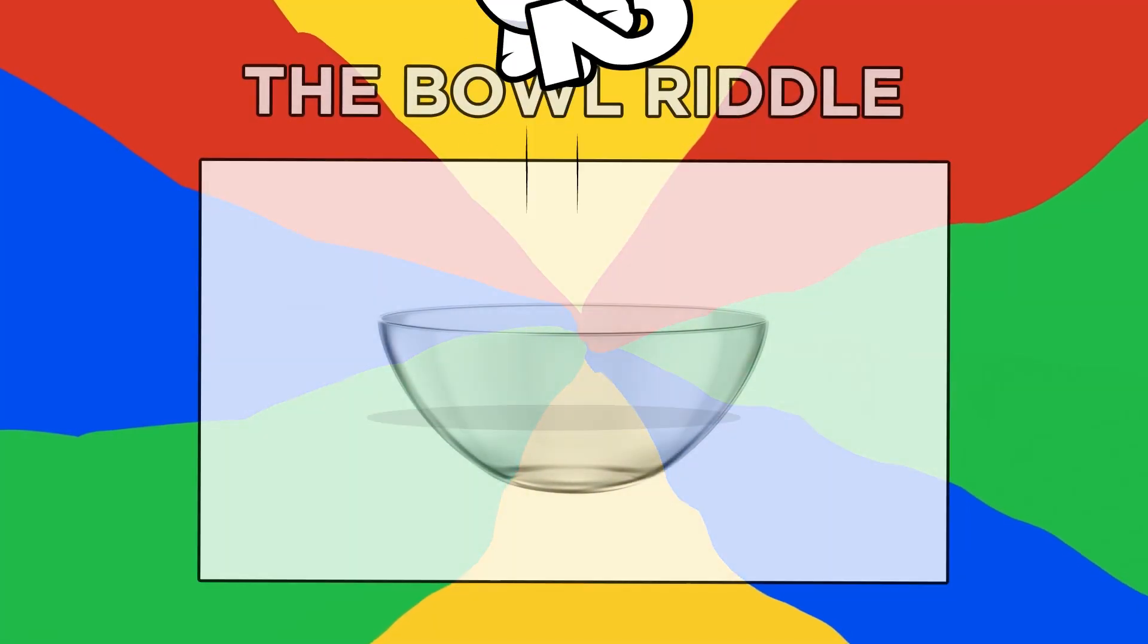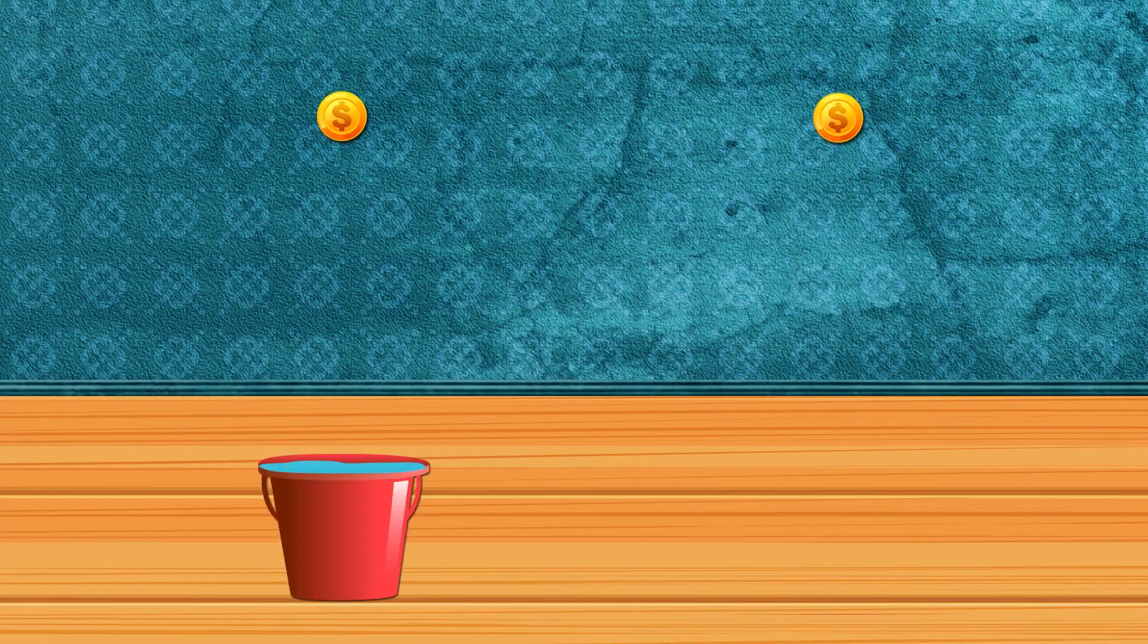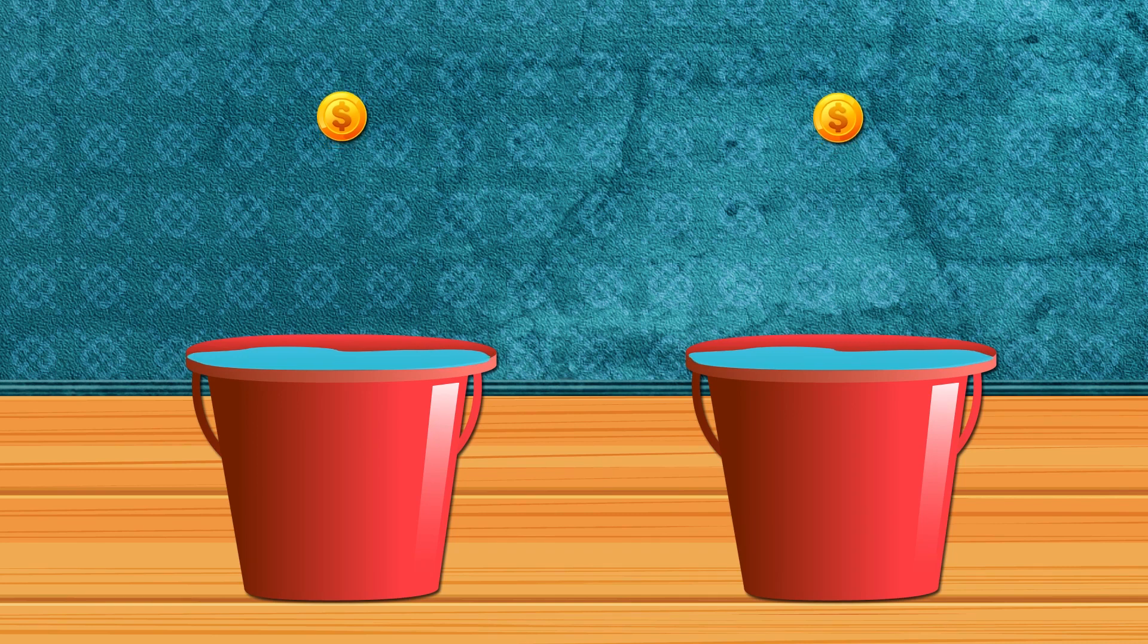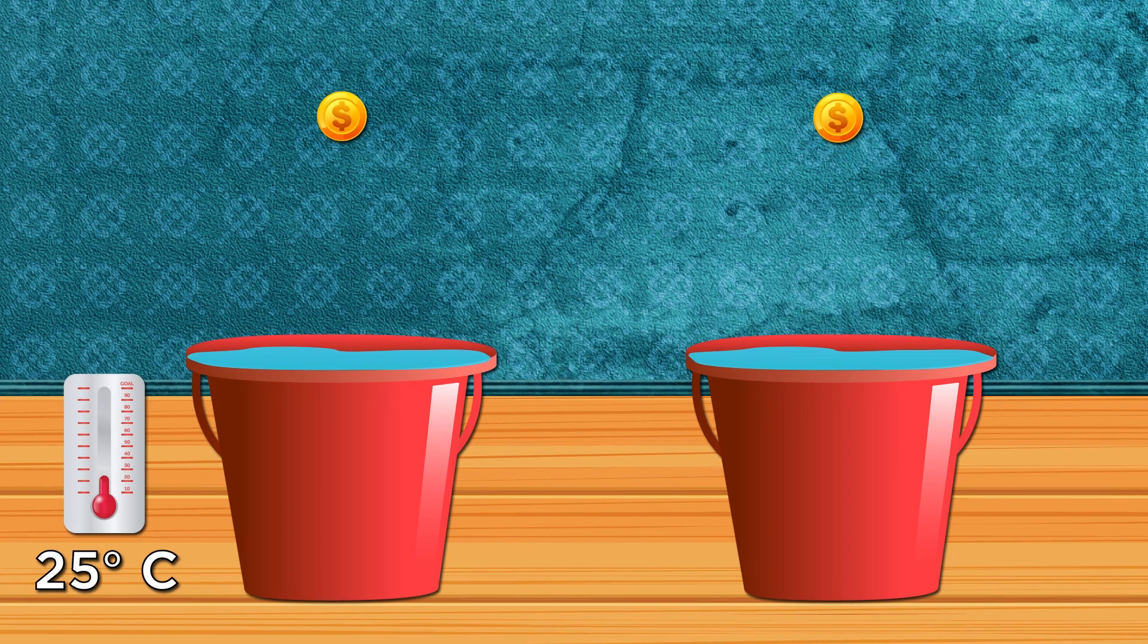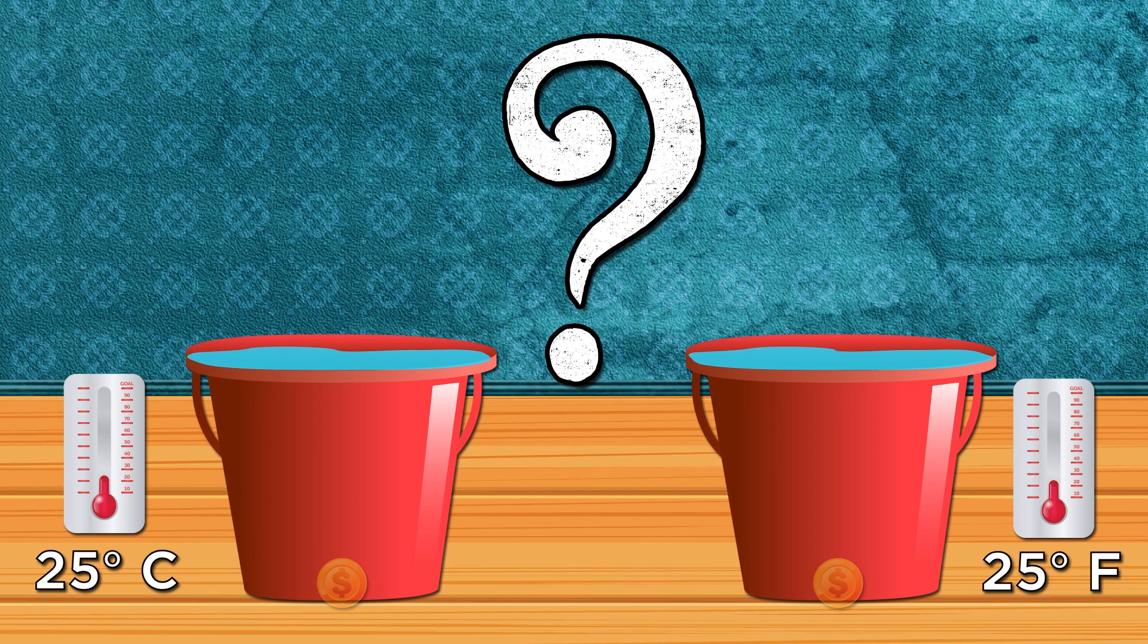Number two, the bowl riddle. Let's warm up with a simple bowl riddle before a harder one. Take two coins, identical in weight, and two buckets filled with the same amount of water. The first bucket of water is 25 degrees Celsius, and in the other one, the water is 25 degrees Fahrenheit. Imagine tossing each coin in each bucket at the same time. When dropped, which coin will hit the bottom first? Pause this video now if you want to figure out the answer for yourself.